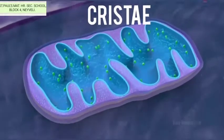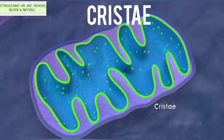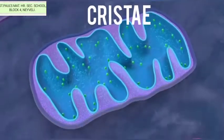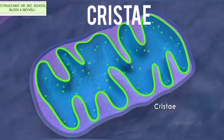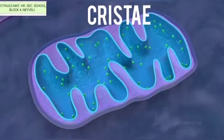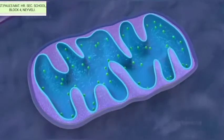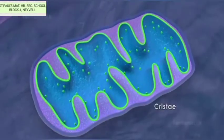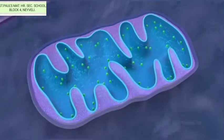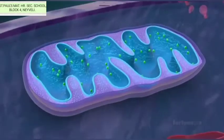The inner mitochondrial membrane gives rise to finger-like projections called cristae. These cristae increase the inner surface area of the mitochondria to hold a variety of enzymes necessary for respiration.